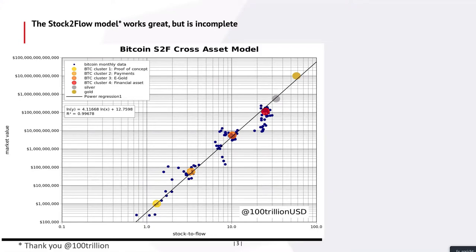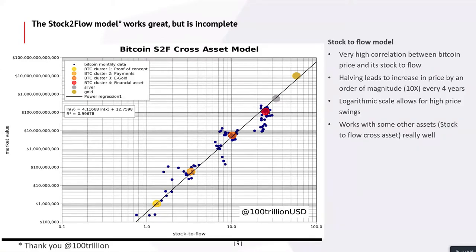There's also a stock-to-flow cross asset model where the Bitcoin value is correlated to other assets like gold and silver. That model predicts $280,000 per Bitcoin for this halving period and much higher for the next halving period.